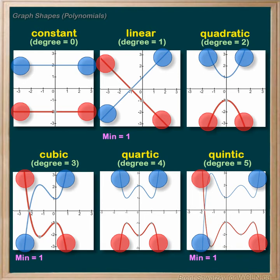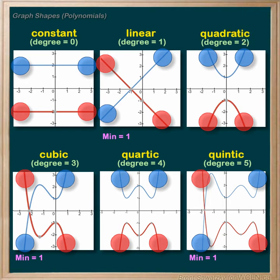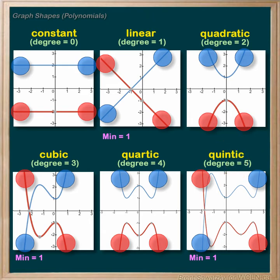Looking at the even degree relationships, the positive even degree ones can stay totally in the top half of our graph, starting in the top left and ending in the top right. So some even degree relationships can definitely avoid crossing the x-axis at all. Similarly, the negative even degree relationships could stay in the bottom half and never cross the x-axis either. So the minimum number of solutions for an even degree polynomial, whether positive or negative, is zero — they can totally avoid crossing the x-axis. Trend number two is really about determining the minimum number of solutions based on whether the degree is odd or even.